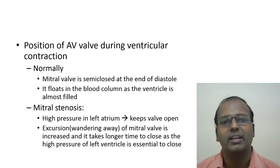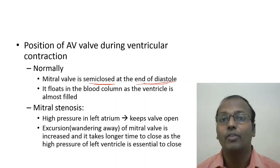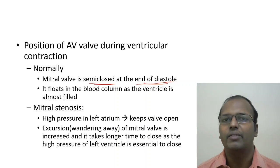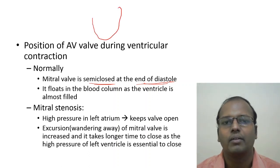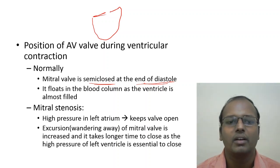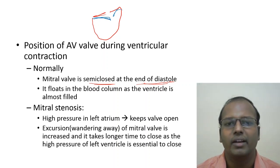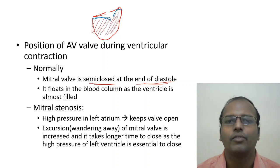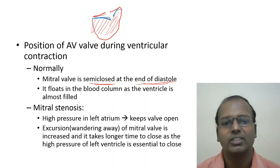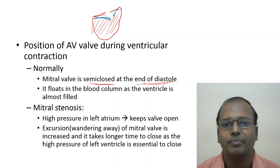Normally, the AV valve is semi-closed at the end of diastole, floating in the blood column as the ventricle fills. In mitral stenosis, there is narrowing of the mitral valve, so the ventricle is not fully filled with blood. The left atrium has high pressure, keeping the valve wide open at the onset of systole. This wide-open valve closes suddenly, producing a loud S1.